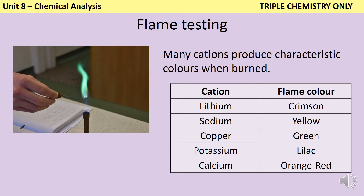There are five cations of which you need to know the characteristic flame colours. Lithium compounds burn with a crimson flame, sodium compounds burn with a yellow flame, and copper compounds burn with a sort of turquoise bluey green flame. You also need to know that potassium compounds burn with a pale lilac flame, and calcium compounds burn with an orange red or brick red flame.